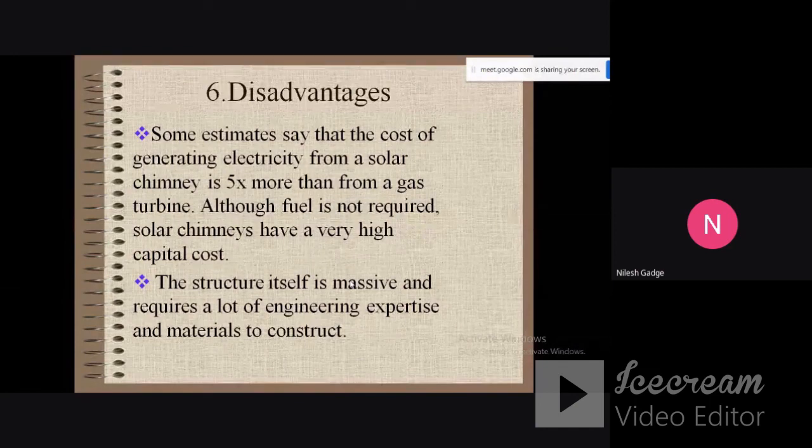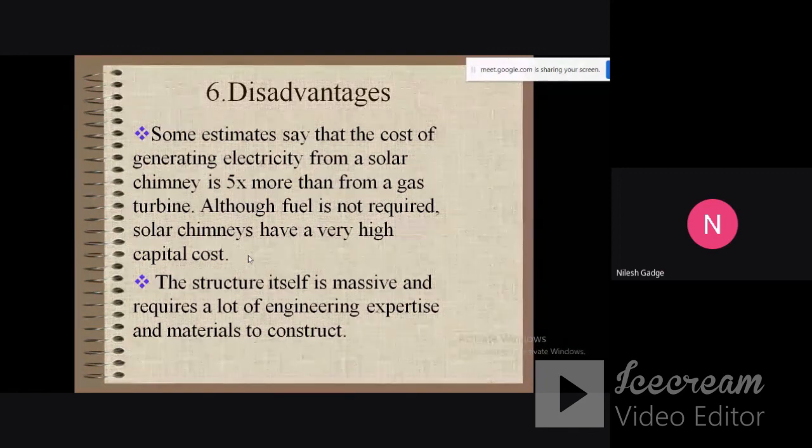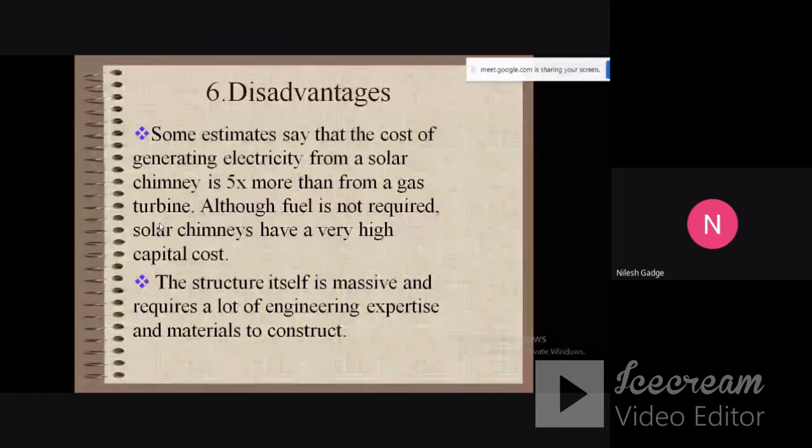Disadvantages: Some estimates say that the cost of generating electricity from a solar chimney is five times more than from a gas turbine. Although fuel is not required, solar chimneys have very high capital cost and the efficiency is low. Wind turbines are more suitable than this. The structure itself is massive and requires a lot of engineering expertise and materials to construct.